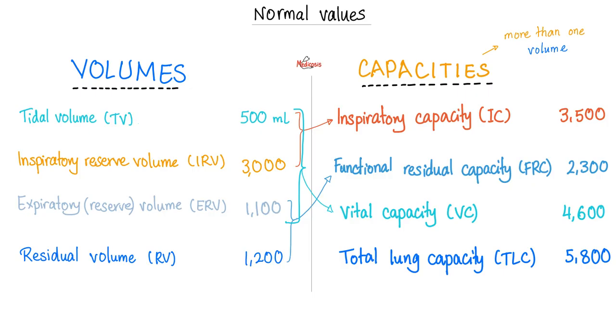The capacities: Add tidal volume and inspiratory reserve volume, you get inspiratory capacity. If I add expiratory reserve volume to the residual volume, I get functional residual capacity. The addition of tidal volume, inspiratory reserve volume, and expiratory reserve volume will yield the vital capacity. Add everything together, you get the total lung capacity.